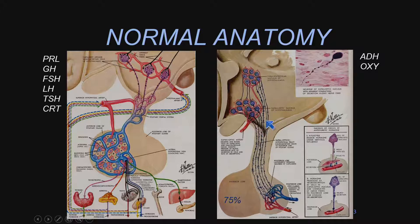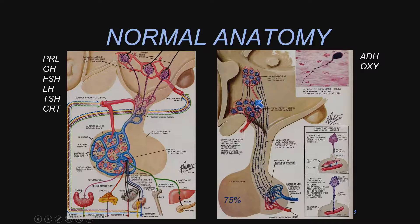The neurohypophysis, which is a smaller, more posterior component of the gland, produces ADH and oxytocin. These are actually transported not via a portal system, but are bundled in neurosecretory vesicles and transported along the dorsal infundibulum to the dorsal aspect of the pituitary gland — the neurohypophysis.